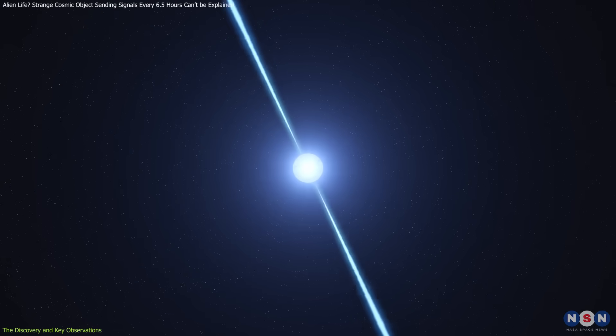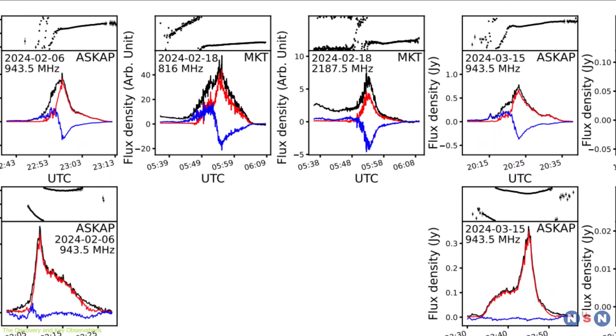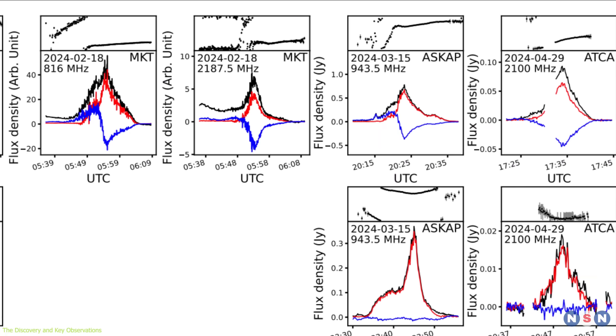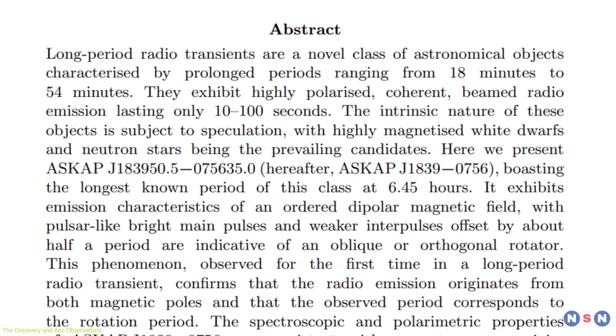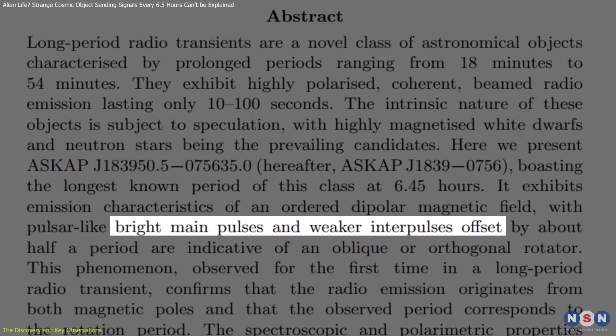This object doesn't just emit a single pulse per rotation, it emits two pulses per cycle. The second pulse, called an interpulse, occurs roughly 3.2 hours after the main pulse.